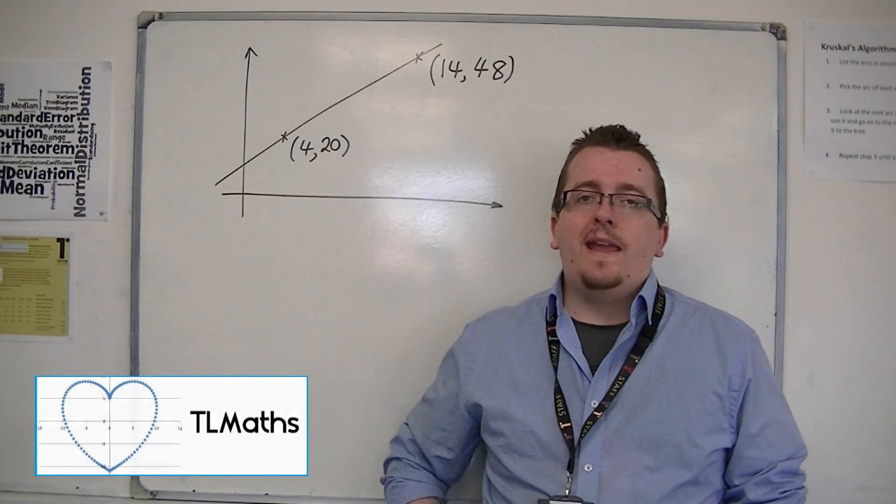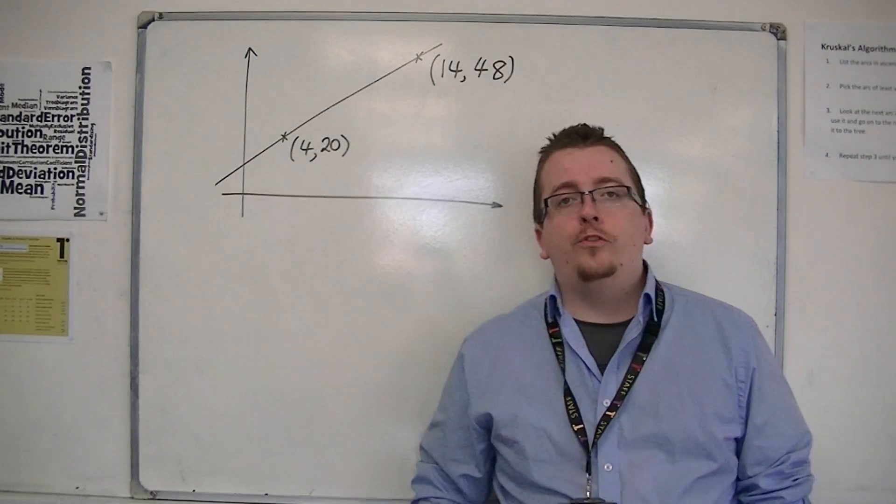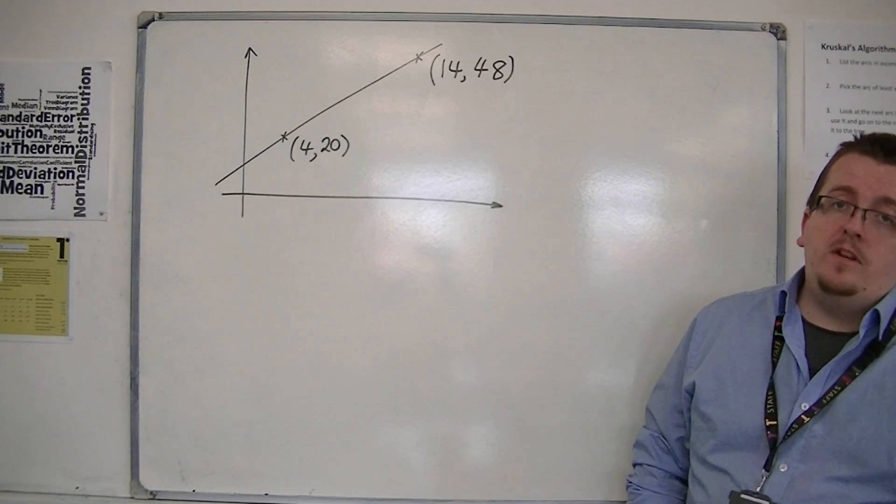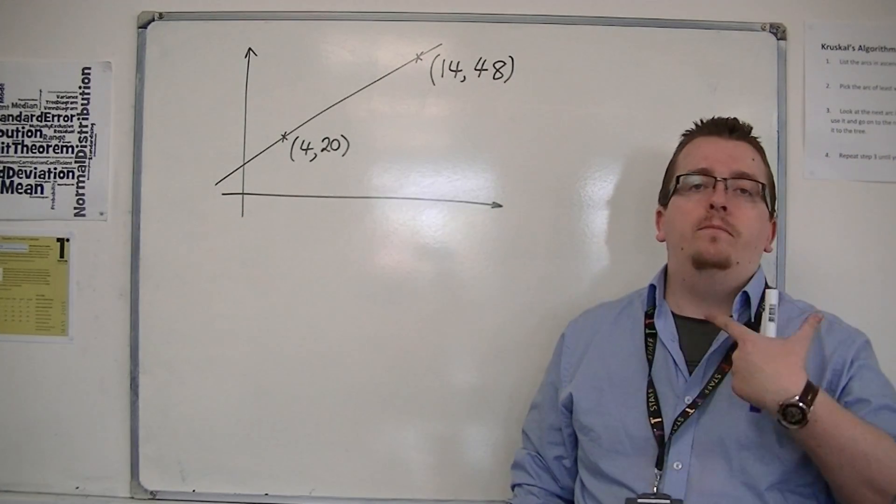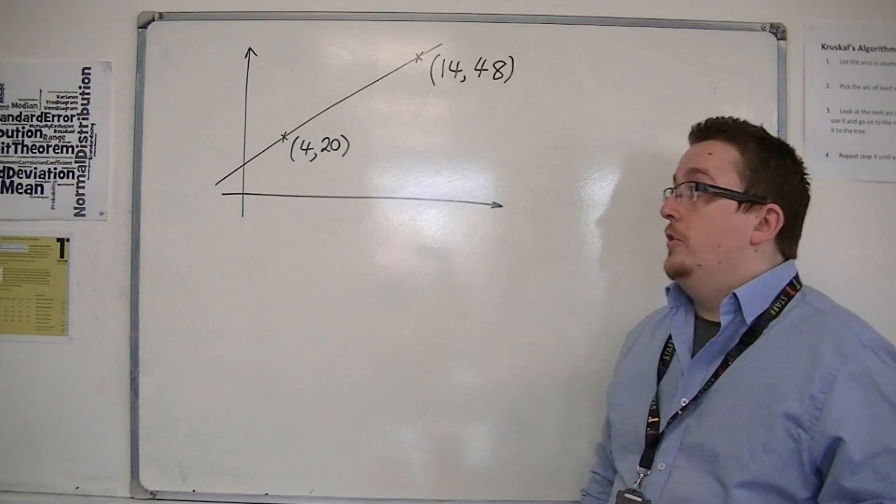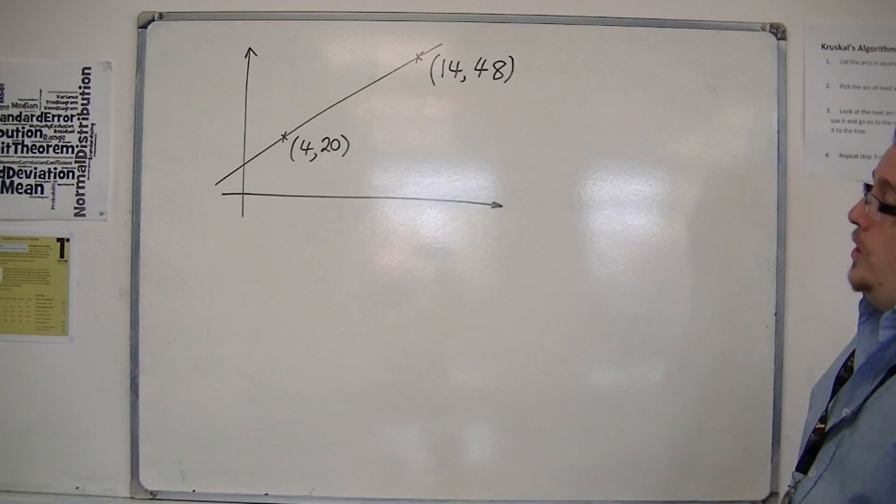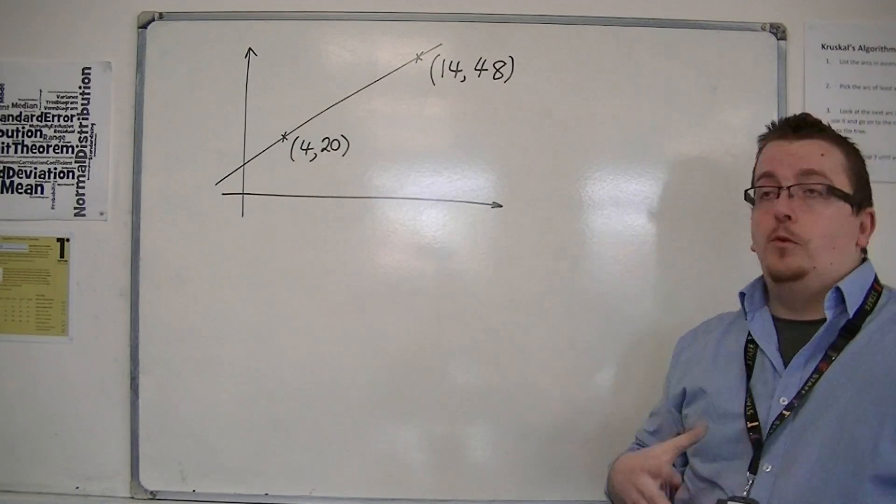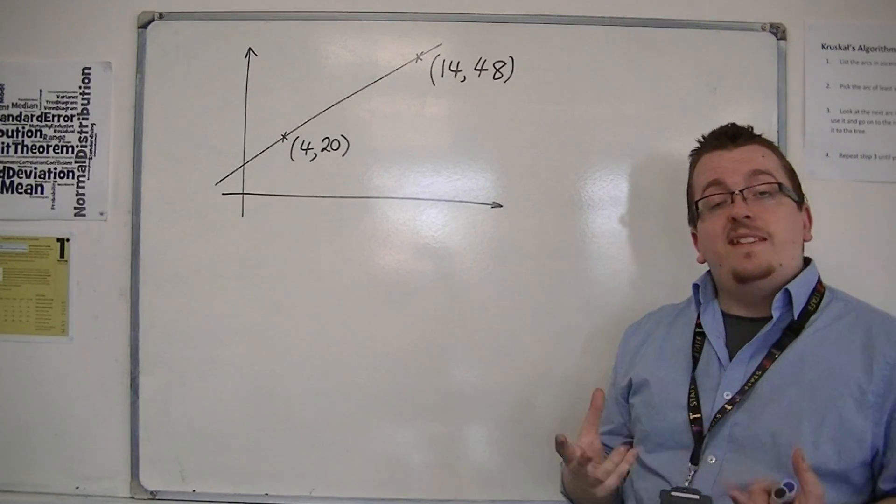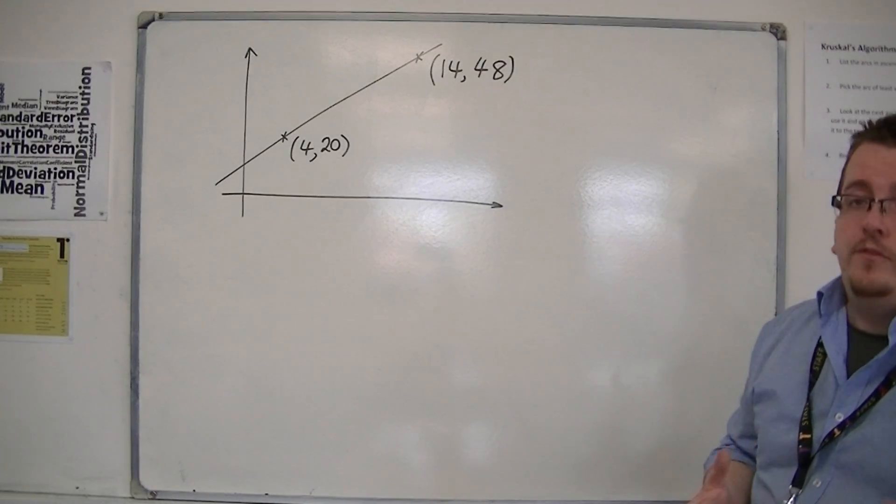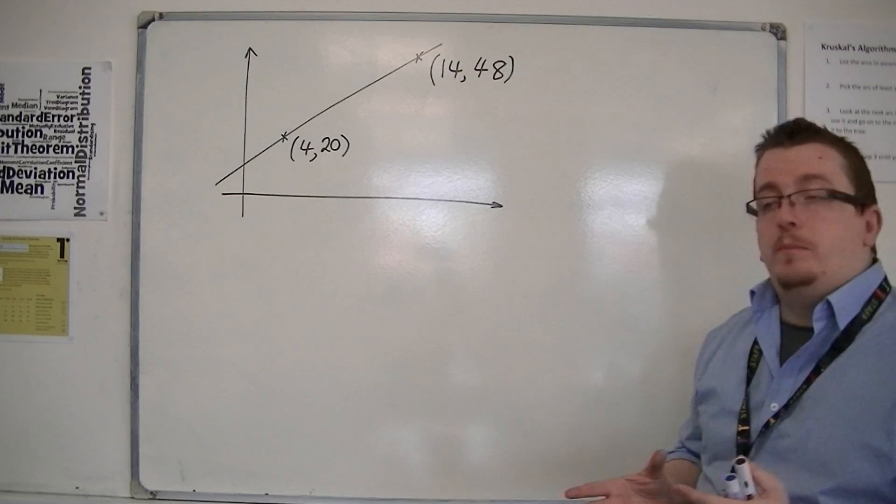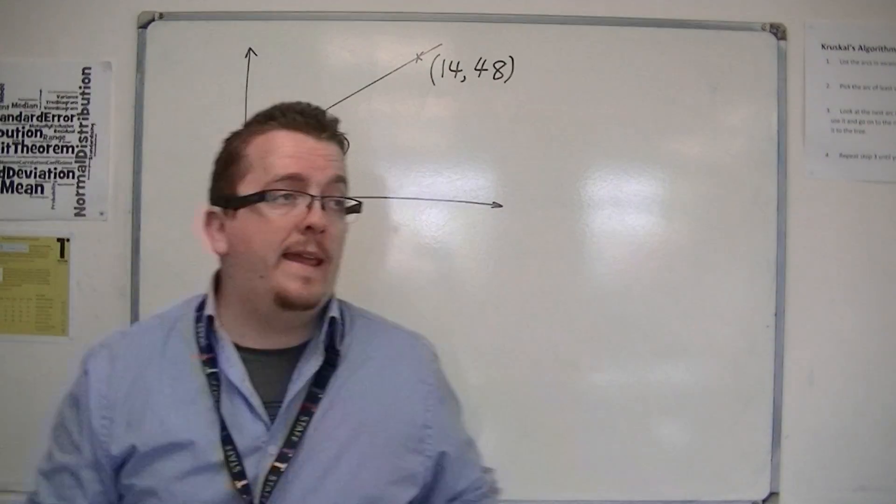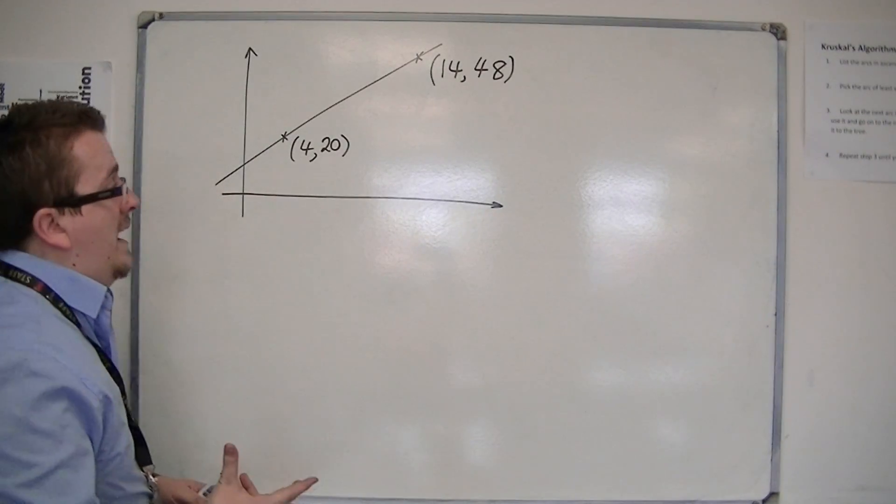In this section we're going to be looking at linear laws, and what I want to do first is do a little bit of revision on straight line equations. We're going to do this by trying to find the equation of the line that goes through the points (4,20) and (14,48). You need to have this skill ready and waiting for you when you're doing these types of problems, so that's why we're doing it here, just for a little bit of a recap.